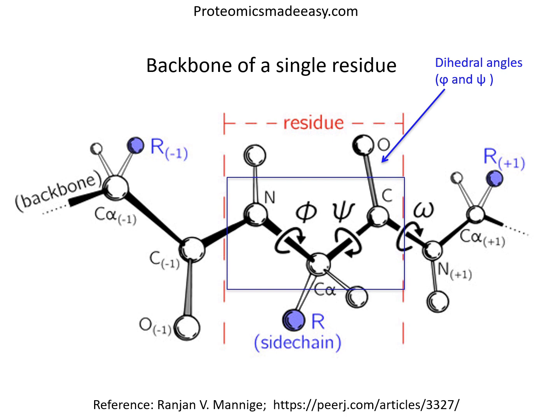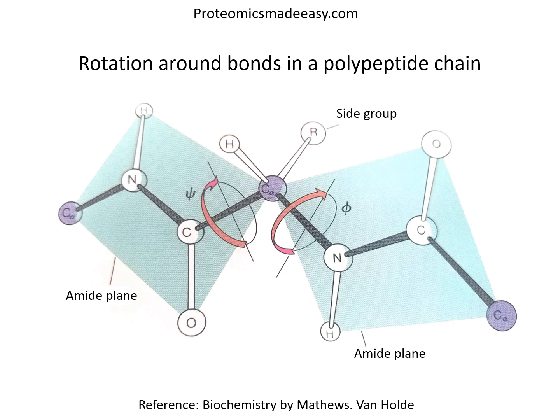These dihedral angles are shared between three atoms and C-alpha is common in both. Ramachandran and colleagues recognized that the twist of a peptide backbone can be described to a great degree by the dihedral angles phi and psi, and these angles may be adjusted to form different structures. You can describe the backbone conformation of any particular residue by a point on a map with coordinates phi and psi. So depending on the degree of rotation of phi and psi, protein structure varies, or vice versa.